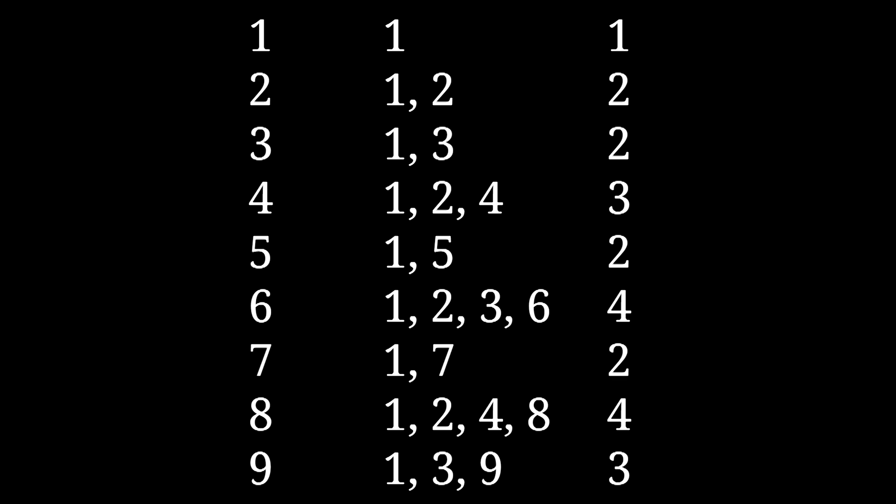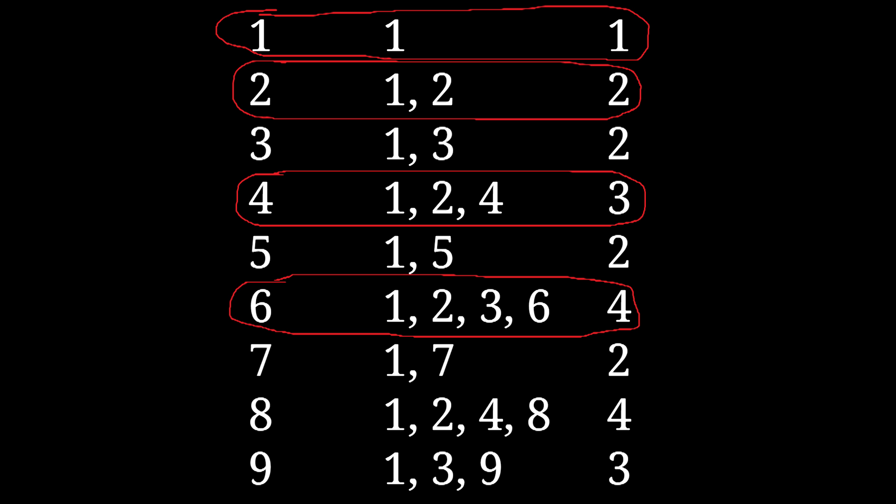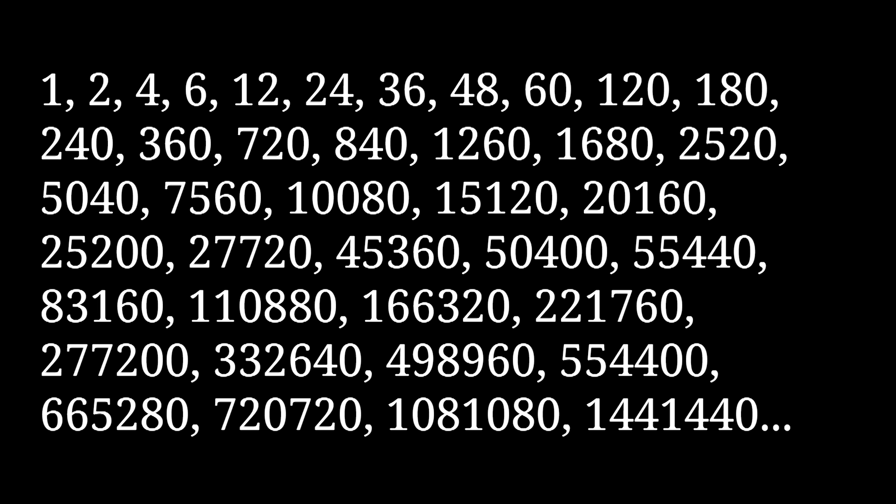So every positive integer has some amount of divisors, and some have more than others, but which ones have the most divisors? Of course, there's no upper bound on how many divisors a given integer can have, but one easy way to formalize the idea that an integer has just a whole lot of divisors is for it to have more divisors than any smaller positive integer. If a positive integer has more divisors than any smaller positive integer, then it's a highly composite number. And the highly composite numbers, you know, they're pretty good. They've got a whole bunch of divisors, but the superior highly composite numbers are way better.